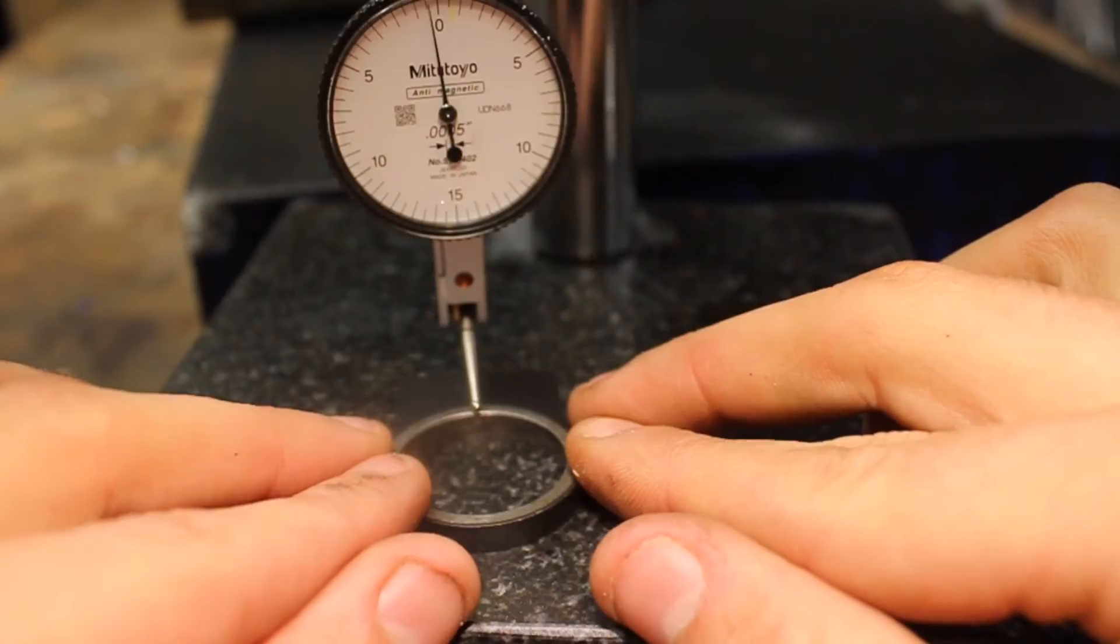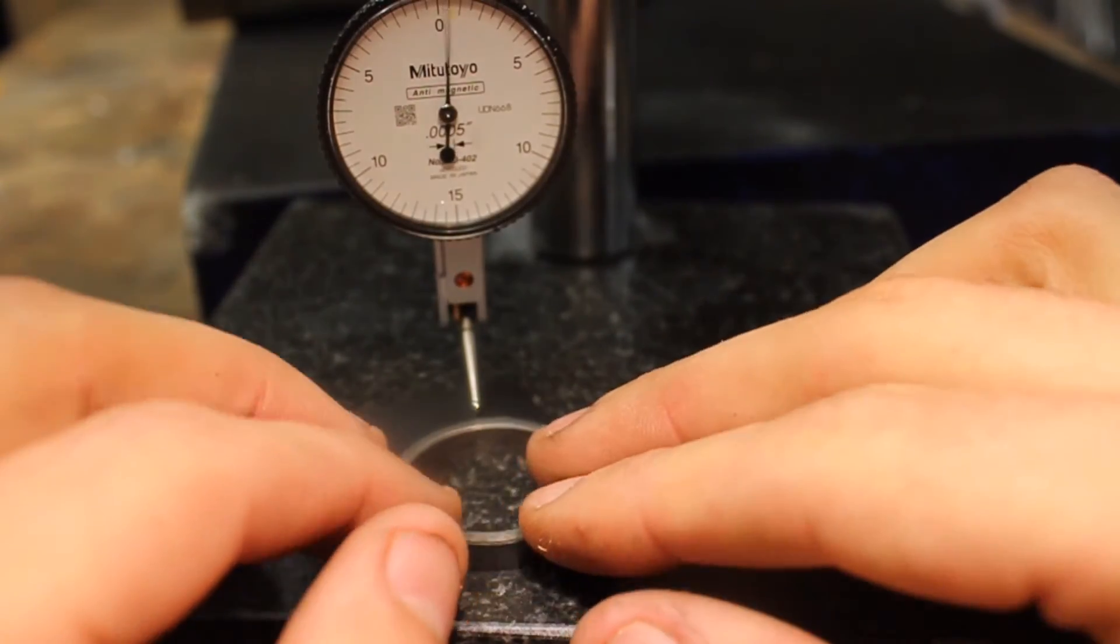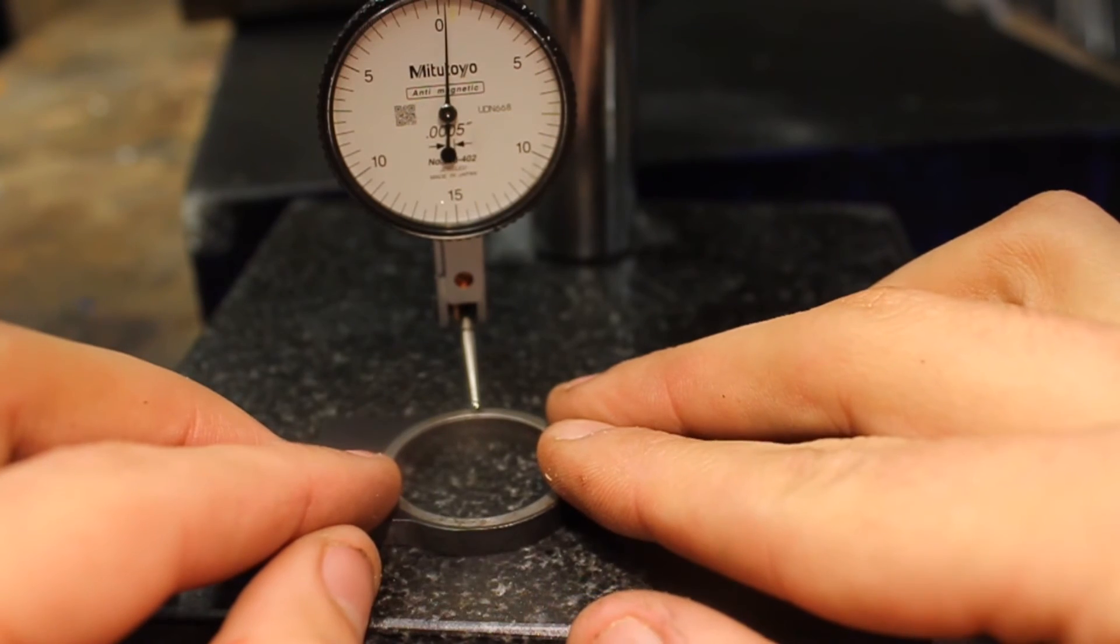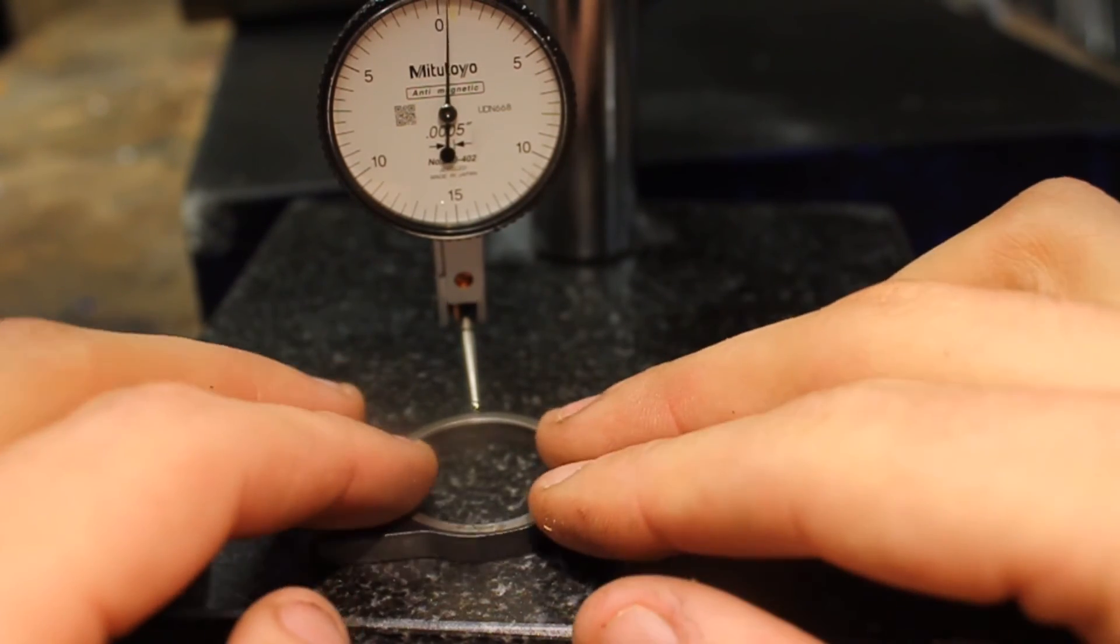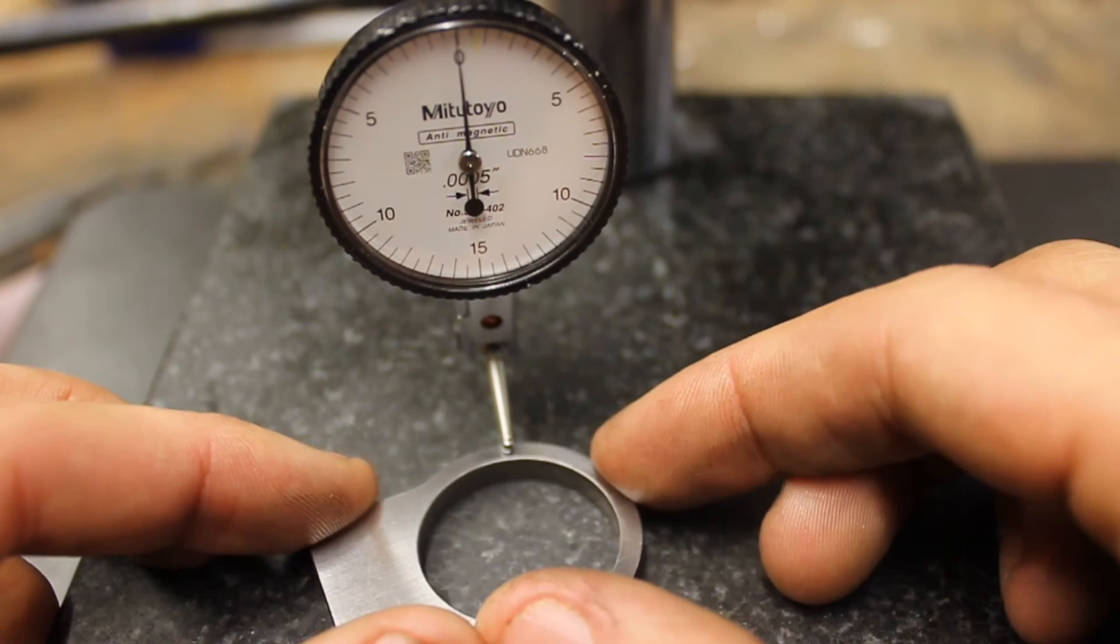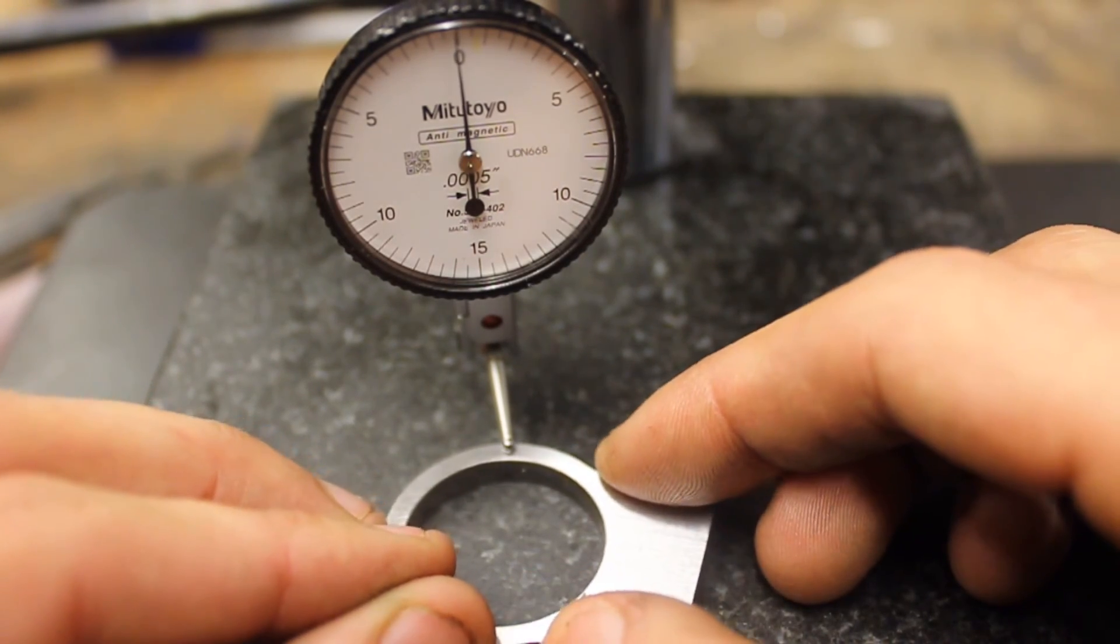Before the part was surface ground, it was between one and two thousandths out of square. But now, it is within one ten-thousandths square. And this is just one of many ways to ensure consistent ranging on a rifle with a separate recoil lug.